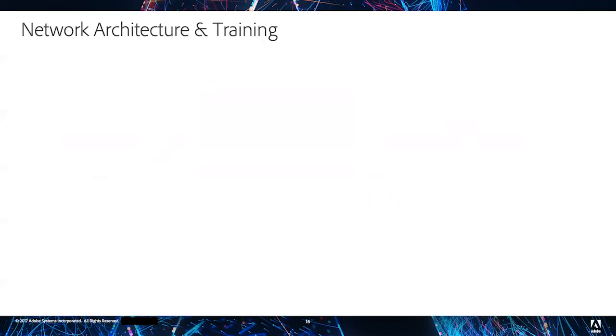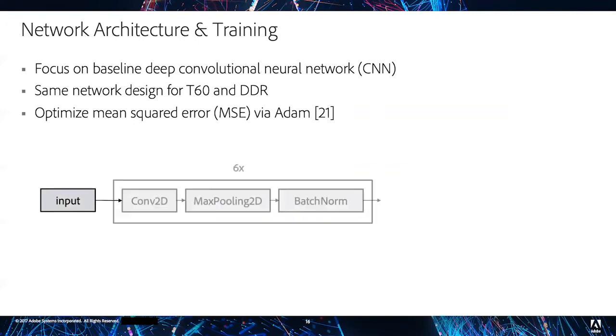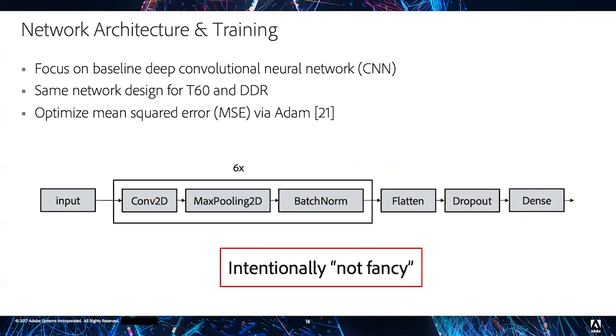For our deep learning architecture training and training strategy, we focus on a baseline deep convolutional network. We use the same design for T60 and DRR. We optimize for the mean squared error via the Adam optimizer. The network looks like this. We input a mel spectrogram, we go through six layers of 2D convolution, max pooling, and batch norm. We flatten the output, apply dropout, and have a final dense layer to predict our final result. This network is intentionally not fancy.